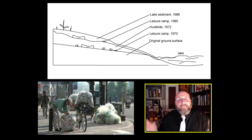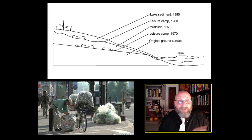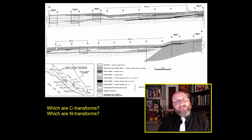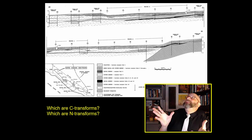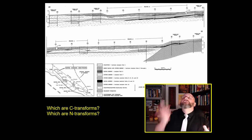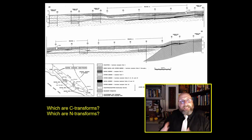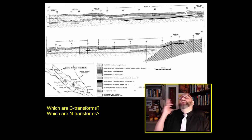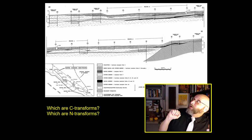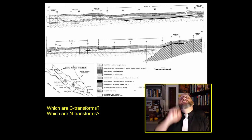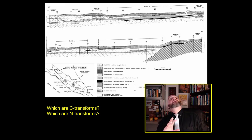Let's return to the Karankawa and identify which are C-transforms and which are N-transforms. The original beach — tidal sand — is an N-transform. Then the dark hatched layer of oyster midden left from when the Karankawa camped here is a C-transform. They abandon their camp; then another layer of tidal sand — N-transform. A second layer of oyster middens — C-transform. A thinner layer of tidal sand — another N-transform. Then a very thick layer of oyster midden — another C-transform.